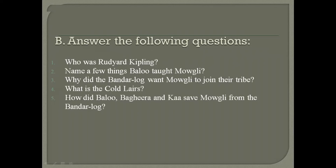Number four: what is the Cold Lairs? The Cold Lairs is the place where Mowgli was taken by the Bandar-log; however, there's more description to it which we have discussed in the lesson — in the video uploaded last, please check on that again. Question number five: how did Balu, Bagheera, and Ka save Mowgli from the Bandar-log? How did it all happen — the fights, the discussions, and the planning that happened between Balu, Bagheera, and Ka in order to save Mowgli — that you have to write.